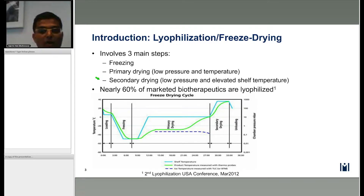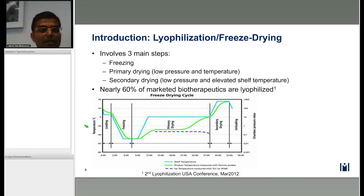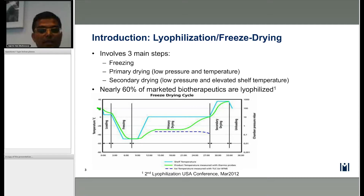What you see in the schematic here is a typical lyophilization process parameter chart. On the left-hand y-axis we have temperature, on the right-hand y-axis we have pressure, and on the x-axis we have time. The process starts with the loading of filled containers — whether vials, cartridges, or syringes — then proceeds through freezing, followed by primary drying and secondary drying, and ends with the unloading of the containers from the lyophilizer.